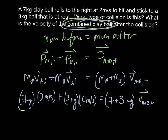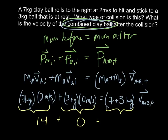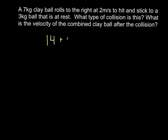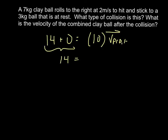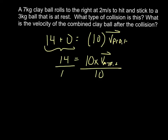Solving: 7 × 2 = 14, and 3 × 0 = 0. We know 7 + 3 = 10. So 14 + 0 = 10 × V_final, which gives 14 = 10 × V_final. Dividing both sides by 10, the final velocity of the combined ball is 1.4 meters per second.